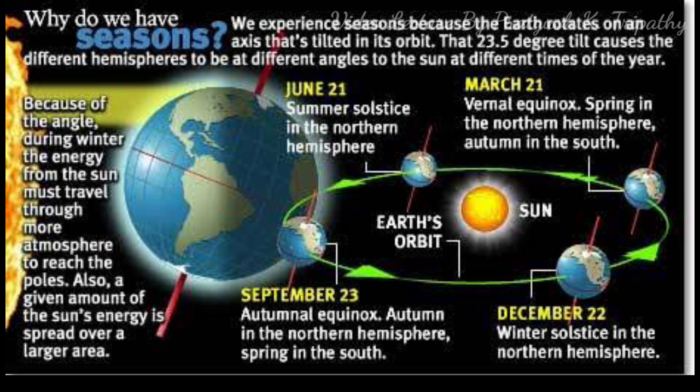On 22nd December, when the sun is overhead Tropic of Capricorn, the conditions are reversed. That is, the length of day increases with increasing latitude in the south of the equator but decreases with the increased latitude north of the equator until there is a continuous night north of the Arctic circle.